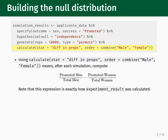For the last step, we pipe into the calculate function. The first input, stat equals diff_in_props, is where we specify what exactly we are calculating — this must mirror how the observed experimental result was calculated. The observed result was calculated by subtracting the fraction of promoted women from the fraction of promoted men, i.e., by taking the difference in proportions. The second input, order equals c(male, female), specifies the order of subtraction: the fraction of promoted men comes before the minus sign, and the fraction of promoted women comes after. The words male and female are categories under the sex column.